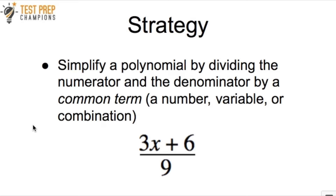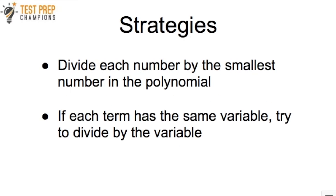The strategy is always to simplify the polynomial by dividing the numerator and the denominator by a common term. This common term could be a number, a variable, or a combination of numbers and variables. The top part of the fraction is the numerator and the bottom part is the denominator. There are two more sub-strategies: first, you can try to divide each number by the smallest number in the polynomial. Second, if each term has the same variable, you want to try to divide each term by that variable.